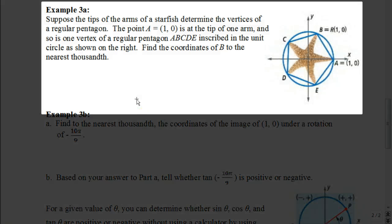Okay, let's look at this example. It says, suppose the tips of the arms of a starfish determine the vertices of a regular pentagon. The point A, which is at (1, 0), is at the tip of one arm and is one vertex of a regular pentagon ABCDE inscribed in the unit circle as shown on the right. Find the coordinates of B to the nearest thousandth. So here's what they give us. They tell us that point A, which is at (1, 0), is one of the vertices on this regular pentagon, and we want to figure out what's the coordinates of point B. Well, it doesn't seem like they give us enough information to figure that out.